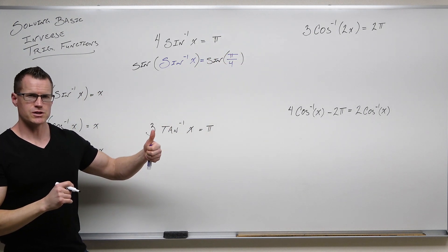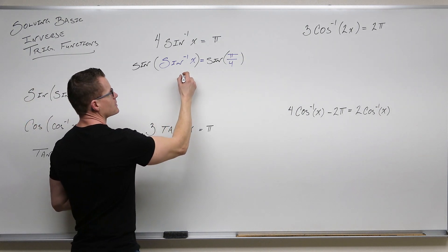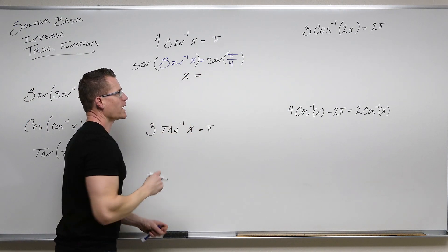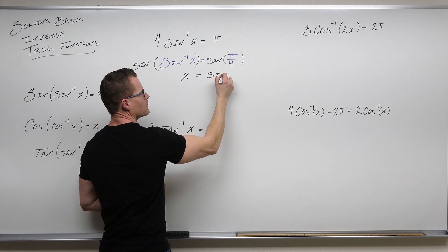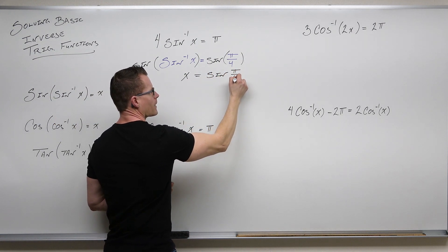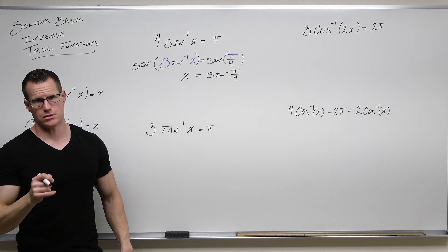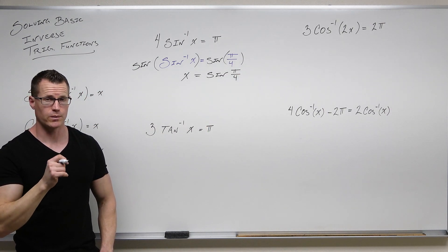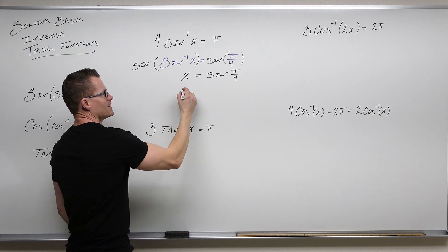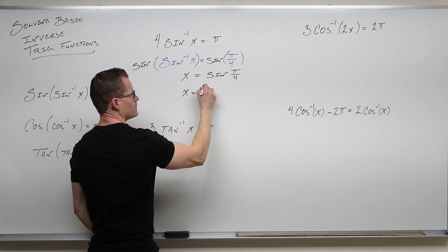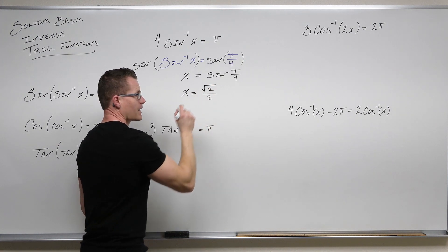So sine of sin⁻¹(x), that's just going to be x. On the right-hand side, wait a minute, sine of π/4, that's something we can actually do. So sine of π/4 is √2/2. Use your circle if you've remembered it already, that's great.